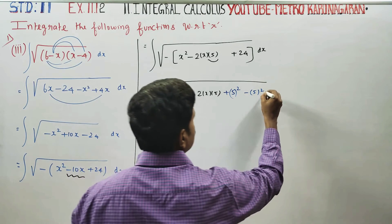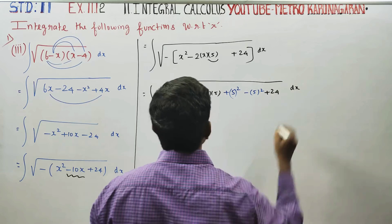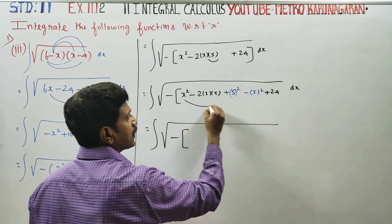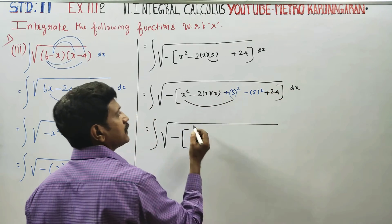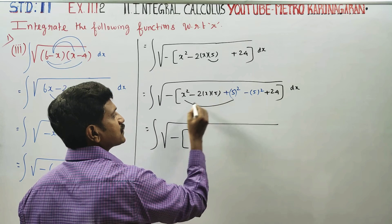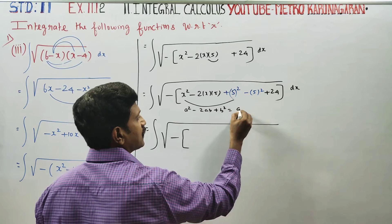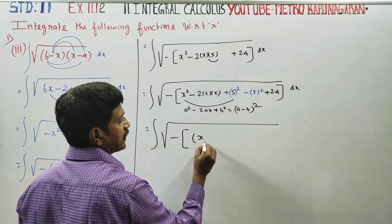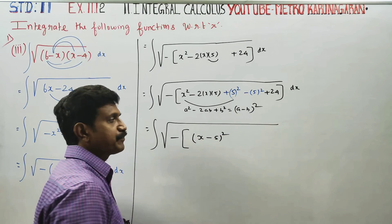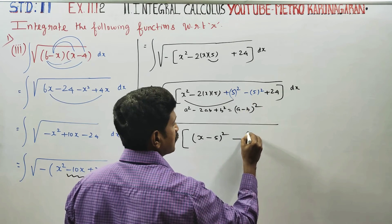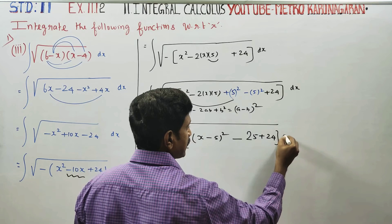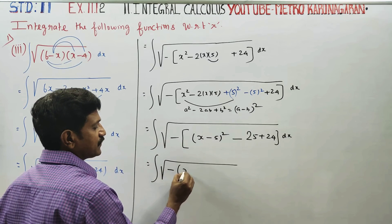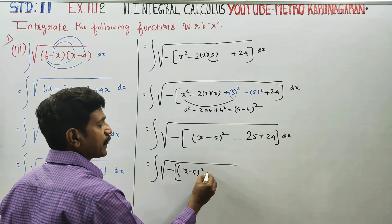Plus 24 — add and subtract a value. Then the algebra formula: a squared minus 2ab plus b squared is called as (a minus b) whole square. Using this formula, minus 5 squared is 25, and the other value is 24 dx.